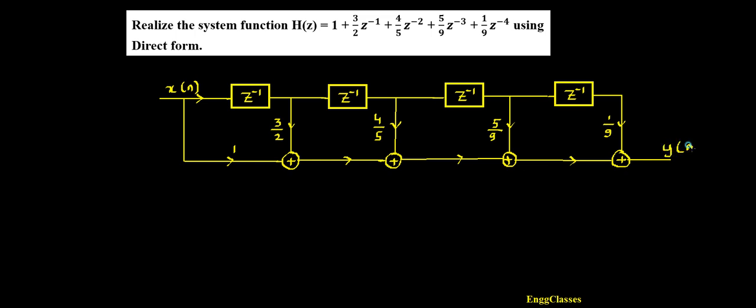So we started with x(n), and after all the inputs, delay elements, and multiplying factors I get the output y(n). This is the simple direct form realization for the given system function H(z). I think there would not be any doubts here, but if there are any doubts please let me know in the comment section and I am happy to answer those. Thank you so much for watching.